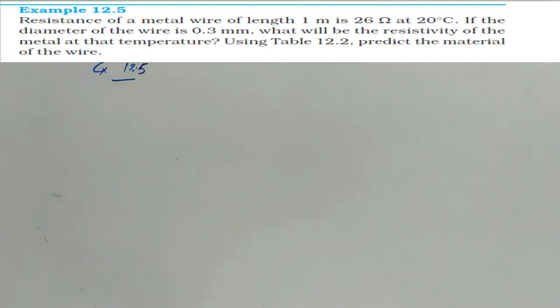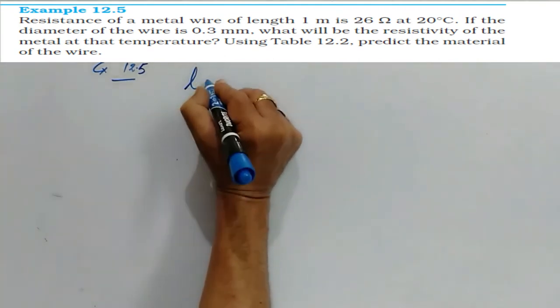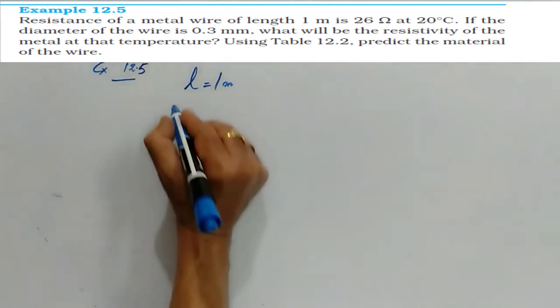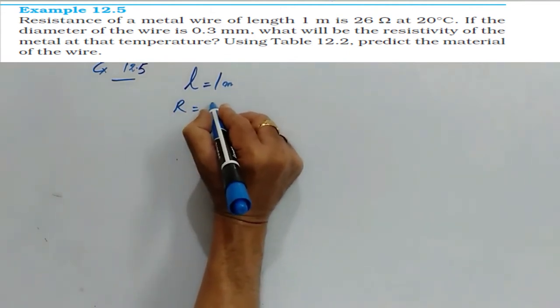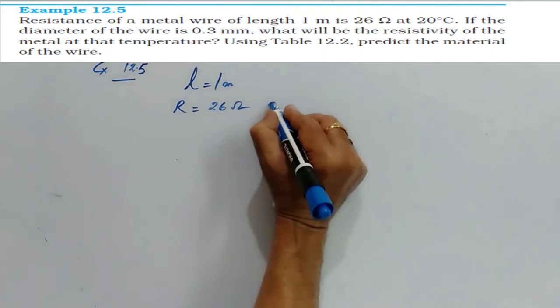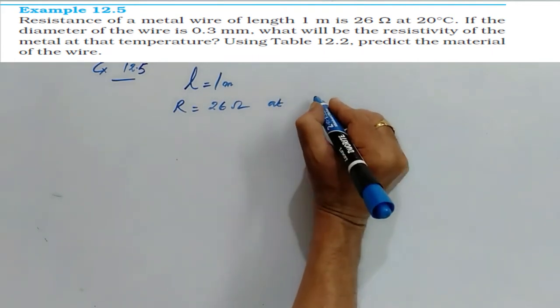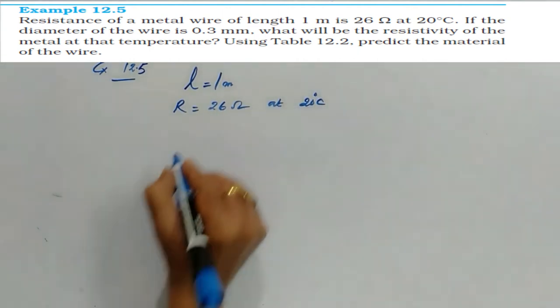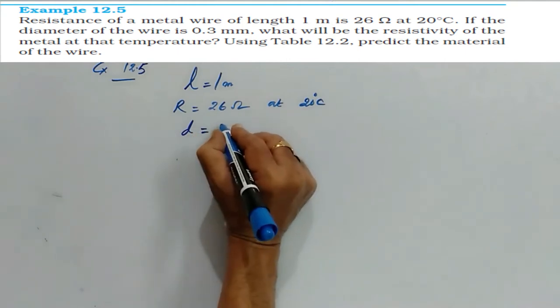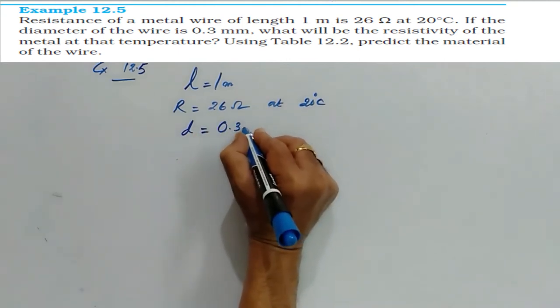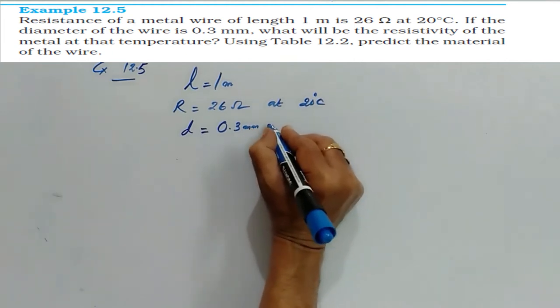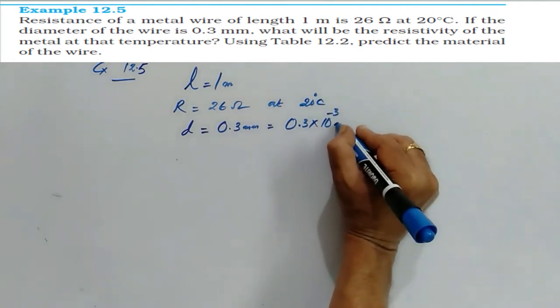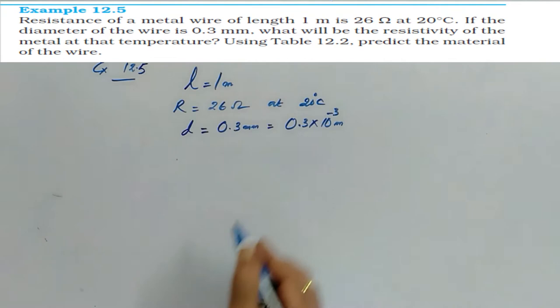In this problem, the length of the wire is given as 1 meter and the resistance R is equal to 26 ohm at 20 degrees centigrade. In addition to that, the diameter is given as 0.3 millimeter, that is 0.3 into 10 to the power of minus 3 meter. Immediately we should convert that into SI units.